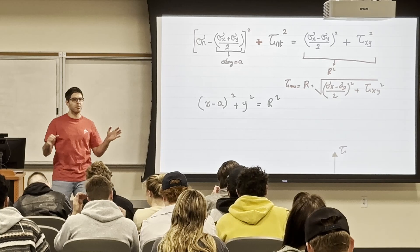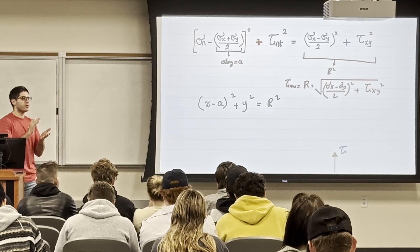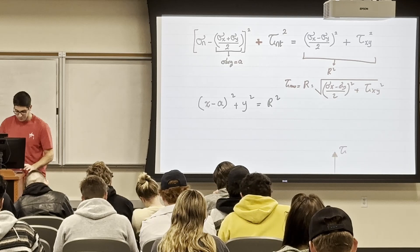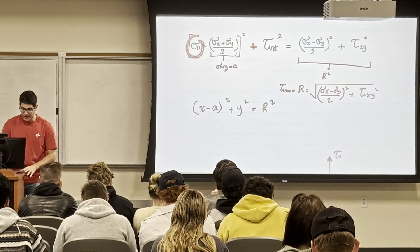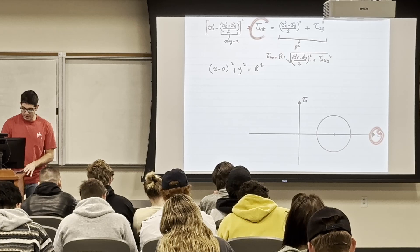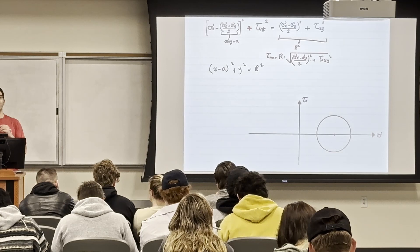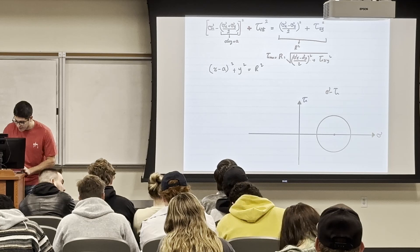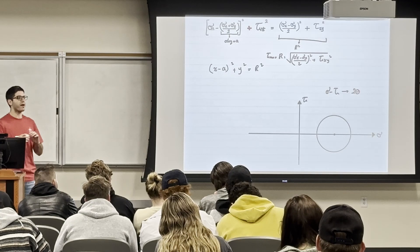We have a graph of σ and τ, but the angles are based on 2θ because the circle was derived in terms of 2θ. This Mohr's Circle is shifted by 'a', which is σ_average. If I know σ_average and the radius, I can draw the Mohr's Circle. The center of the circle is at (σ_average, 0).